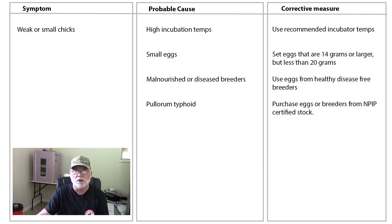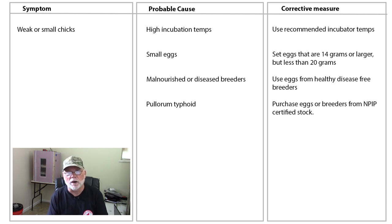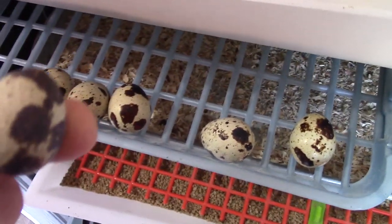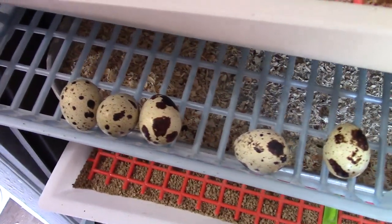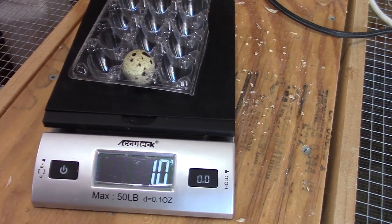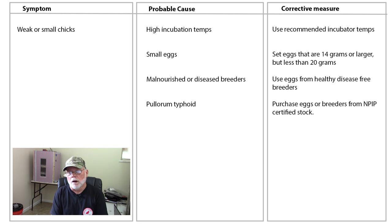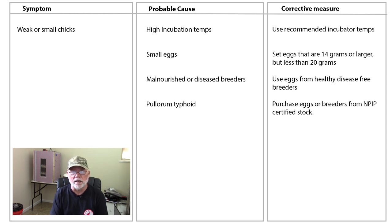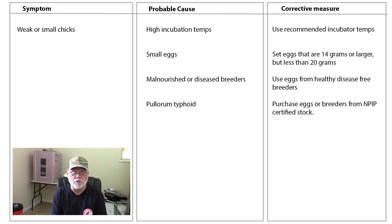Weak or small chicks can be caused by high incubation temperatures — the chicks develop too fast — so use the recommended incubation temperatures. When collecting eggs, select eggs that are above 14 grams but preferably less than 20 grams, as larger eggs can be double yolkers and won't hatch anyway. Malnourished or diseased breeders are another cause; select eggs from healthy, disease-free, NPIP certified flocks. Weak or small chicks could also indicate pullorum typhoid, so again purchase eggs from NPIP certified breeders.